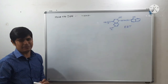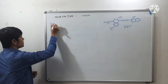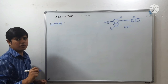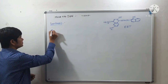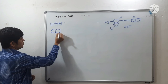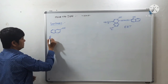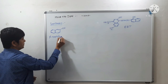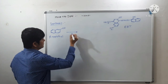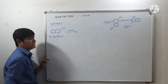Let us see the synthesis of Eriochrome Black T, a monoazo dye. In its synthesis, we have to start from beta-naphthol as the starting material. Beta-naphthol is first reacted with nitrous acid (HNO2), whose structure is OH–N=O.